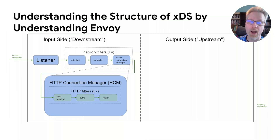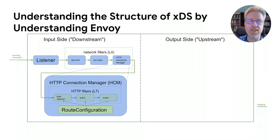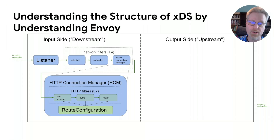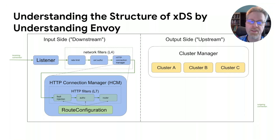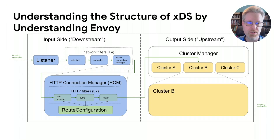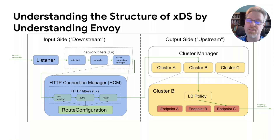The last HTTP filter in the chain is the router, which connects the downstream side to the upstream side. The HCM is configured via a route configuration, which is basically a series of matching rules that determine how each HTTP request is routed. The route chosen for a given request determines two things: configuration parameters such as default timeouts or retry configs, and which upstream cluster the request will be sent to. On the upstream side, there's basically a set of clusters. The cluster itself has configuration for how to find the list of endpoints — such as using DNS or EDS — and what LB policy to use for those endpoints.